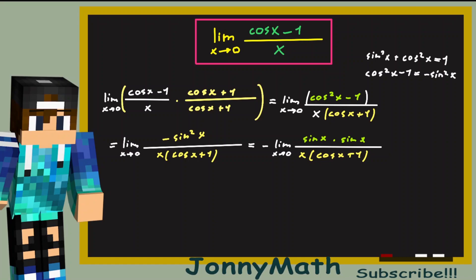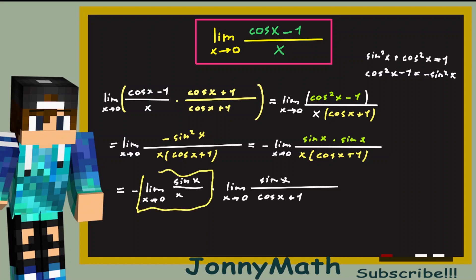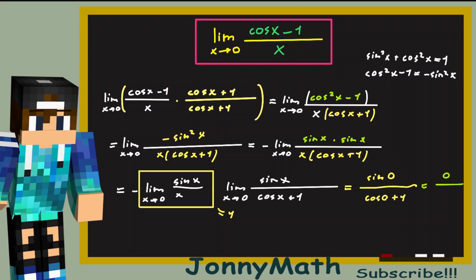And this equals minus the limit as x goes to 0 of sine of x times sine of x, divided by x times cosine of x plus 1. Now we can split this into two separate limits: minus the limit as x goes to 0 of sine of x over x, times the limit as x goes to 0 of sine of x over cosine of x plus 1. The first limit simply equals 1. We can directly substitute 0 into the second limit: sine of 0 over cosine of 0 plus 1, which is 0 divided by 2. So we actually get that this limit equals 0.